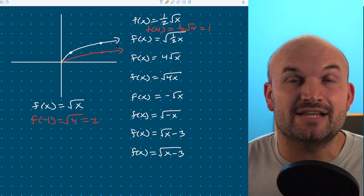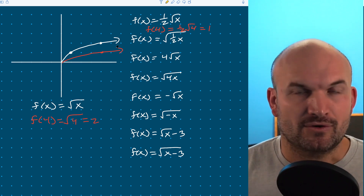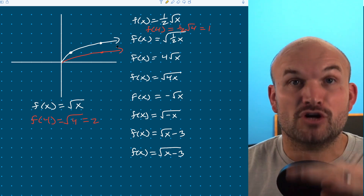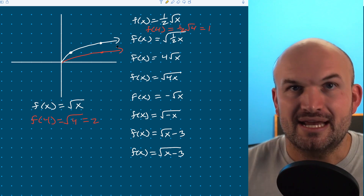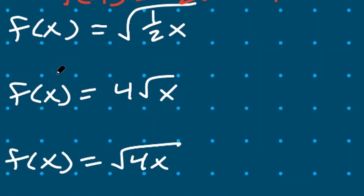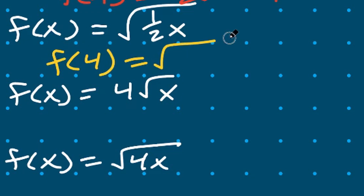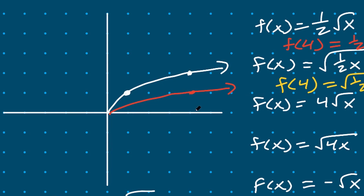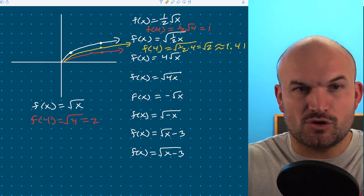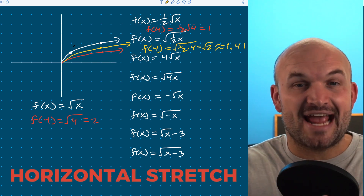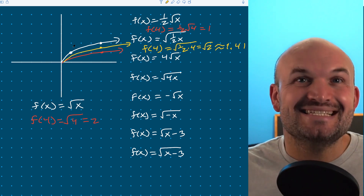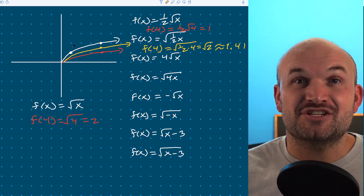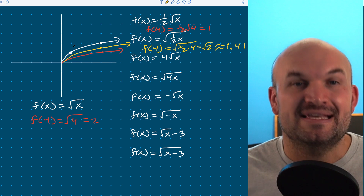Where many students make their mistake: they think if one-half outside vertically compresses, then one-half inside horizontally compresses. But let's check: plugging in f(4) with one-half inside gives √(one-half × 4) = √2 ≈ 1.41. That point is between one and two — this is actually a horizontal stretch, the exact opposite of what you'd expect. When you multiply on the inside by a number between zero and one, it's a horizontal stretch. Next example: multiplying by four outside — that's a vertical stretch because four is larger than one. f(4) = 4 × √4 = 4 × 2 = 8, so the graph stretches very high.